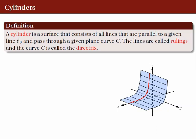This is the second video out of three on the topic Traces of Surfaces, Cylinders, and Surfaces of Revolution. Let's continue our discussion on cylinders. A cylinder is a surface that consists of all lines that are parallel to a given line L0 and pass through a given plane curve C.